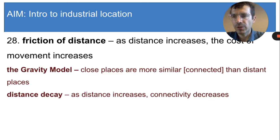Friction of distance is closely related to the gravity model and distance decay because it helps explain why those two ideas are true. As distance increases, there is less connectivity between places, precisely because people prefer to move over smaller, not greater distances. So it makes sense that people far apart will interact less.